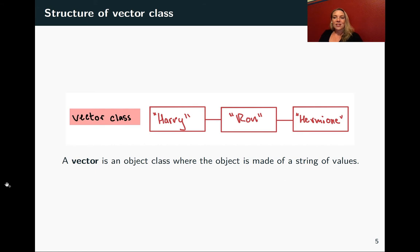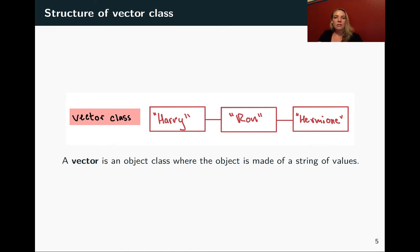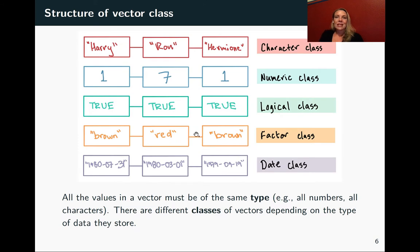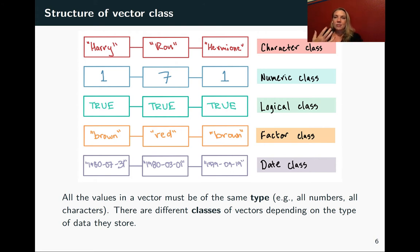We're going to start with the vector class — I've done a little cartoon here of what this looks like. My son's favorite book series is Harry Potter, so we're going to have some examples from Harry Potter. A vector you can think of as a string that can take multiple values, but they all have to be the same type of thing. This is an example of a vector with the names of three of the main characters — you can see those elements are kind of like beads on a string. There is a hard and fast rule in R that within a vector, each element has to be the same type of data.